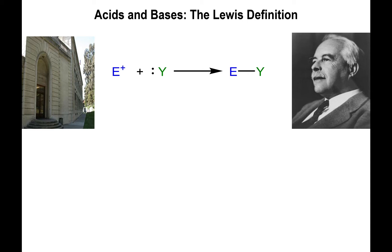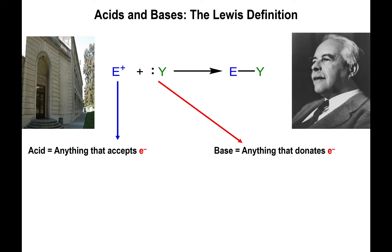Lewis looks at the reactivity of acids and bases from a different point of view. Instead of focusing on the protons, he decides to focus on the lone pairs of electrons. From his point of view, an acid is anything that accepts electrons, and anything that donates electrons is what he considers a base. By introducing the idea of lone pairs to define acidity and basicity, he basically extends the full scope of what can be considered an acid and what can be considered a base.